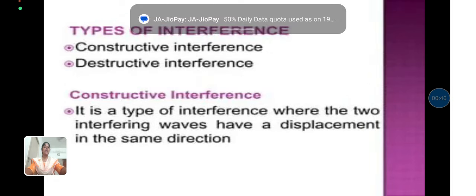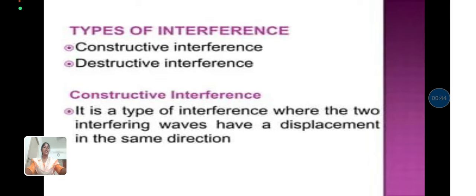Next we see the types of interference. The types of interference are constructive interference and destructive interference. Constructive interference is a type of interference where the two interfering waves have a displacement in the same direction.